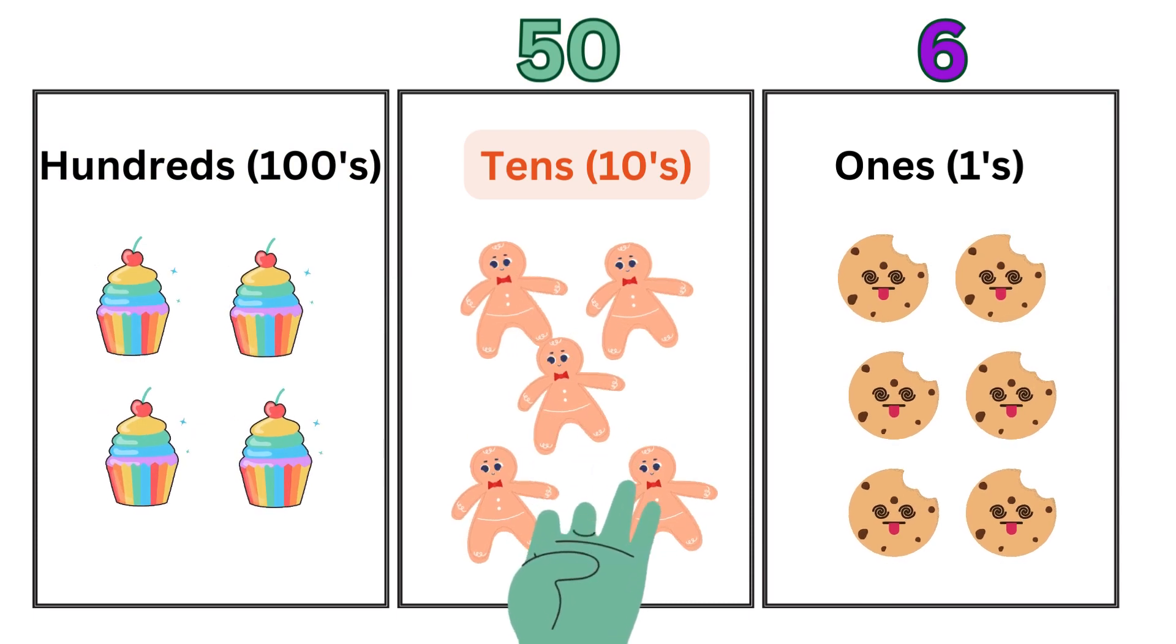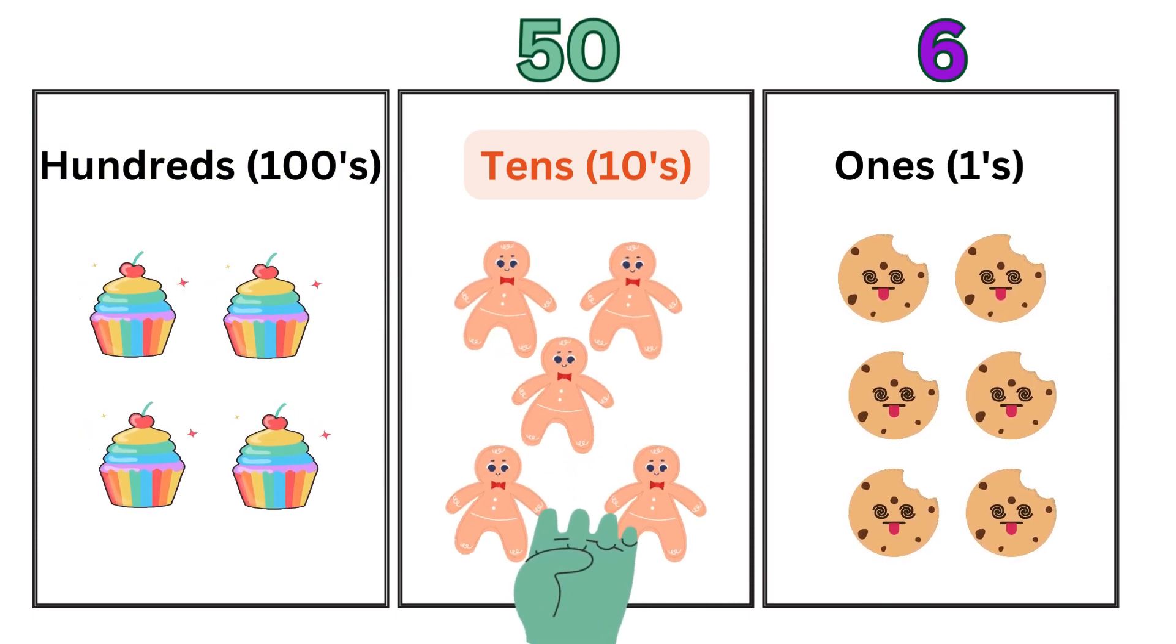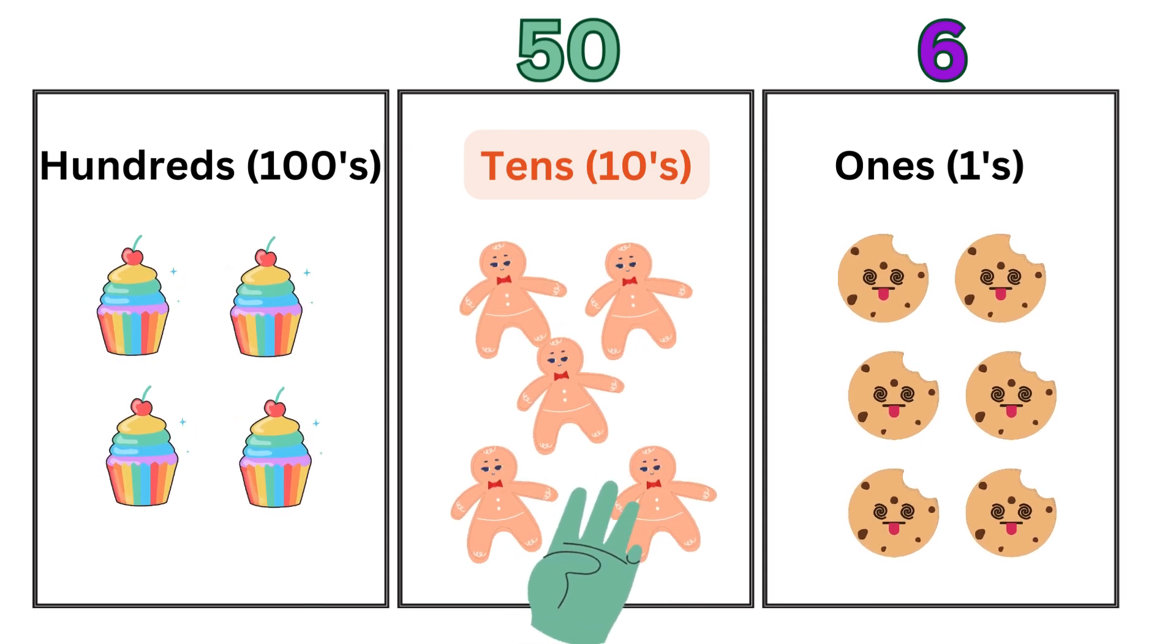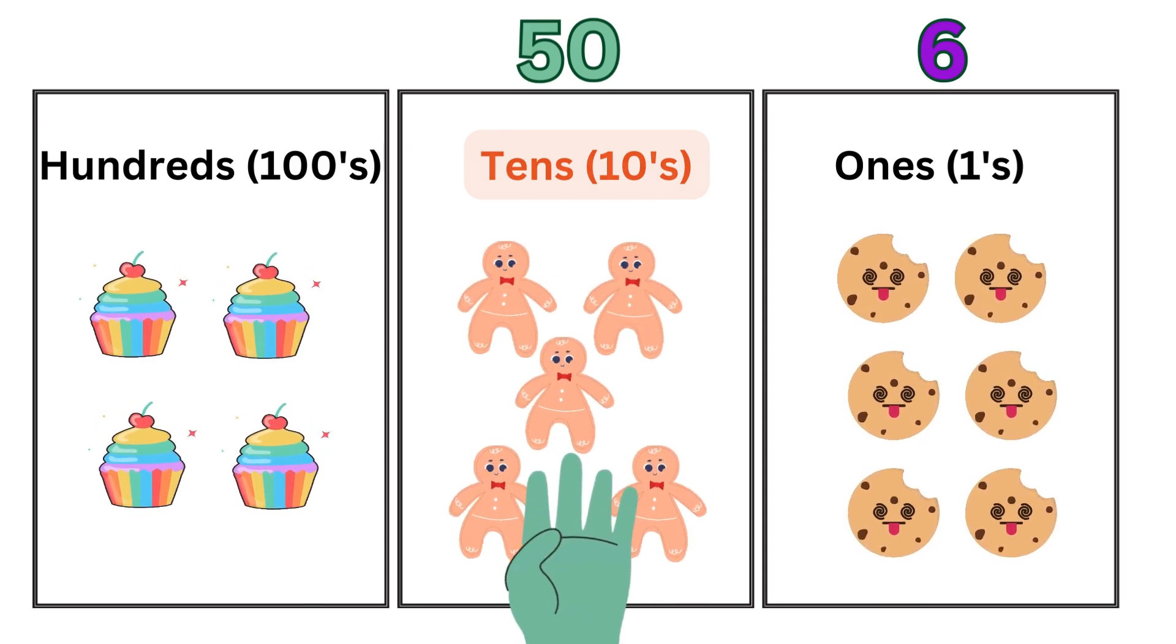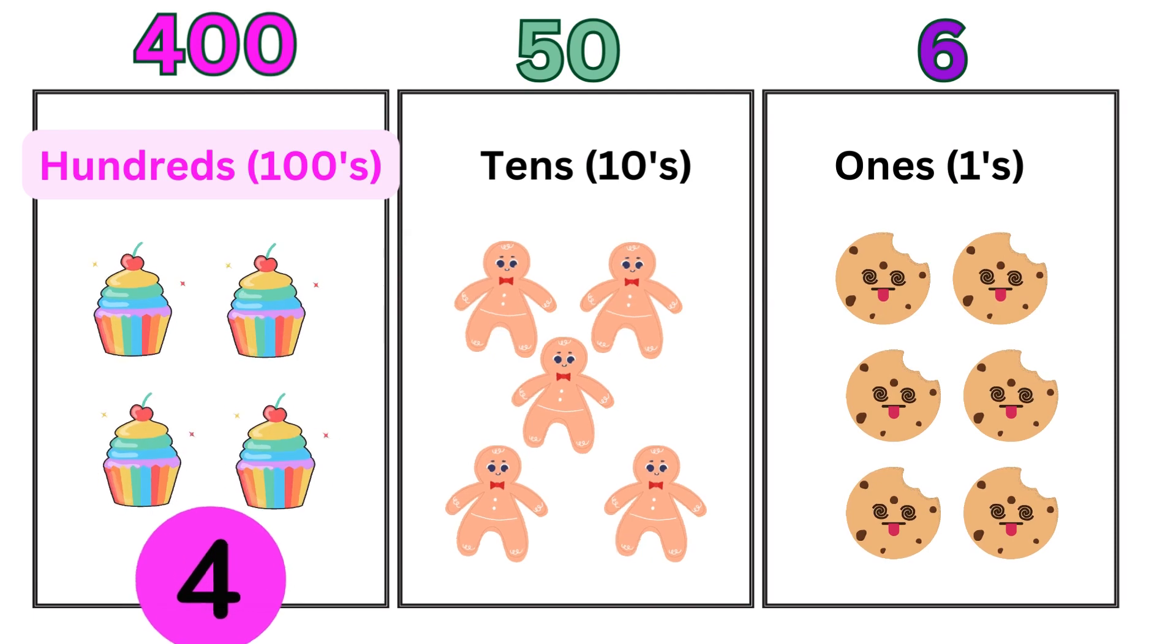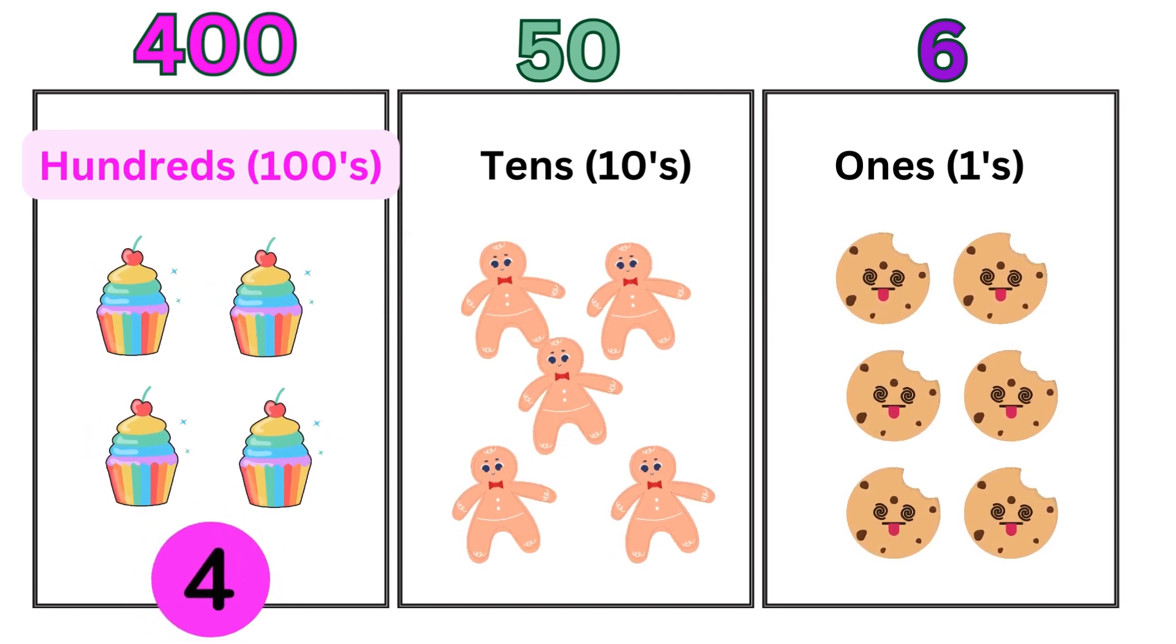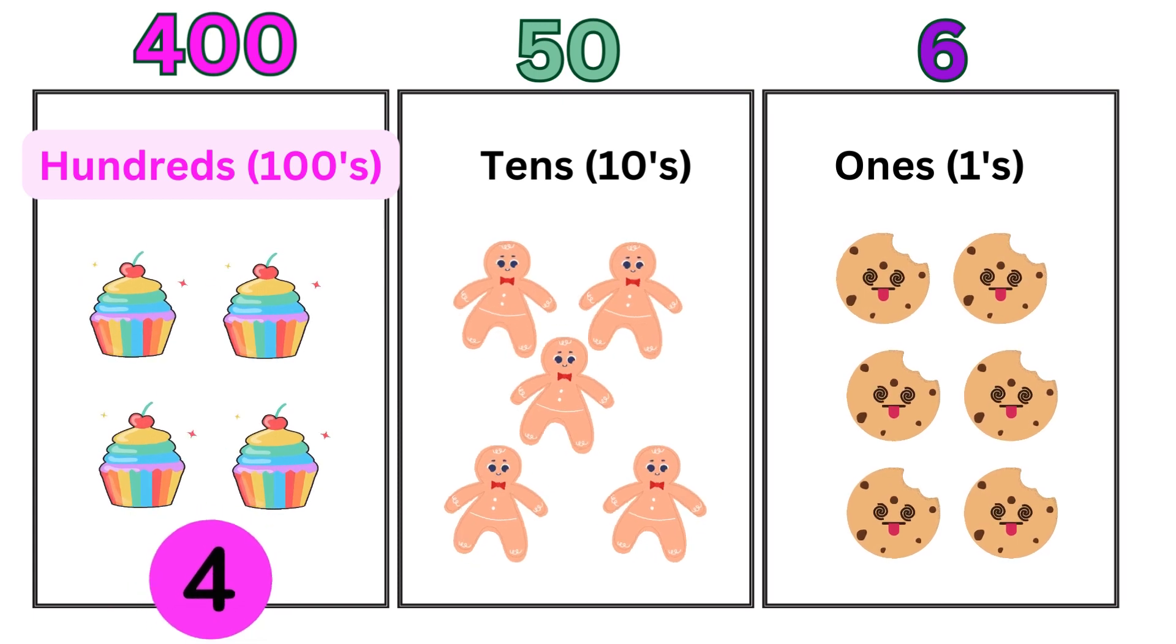The next one is the 10s place. In the 10s place we have 5 gingerbread cookies, so it means 5 tens, so it's the digit 50. The next is the 100s place. In the 100s place we have 4 cupcakes, so it means 4 hundreds, so it's the digit 400.